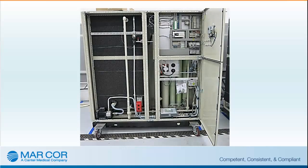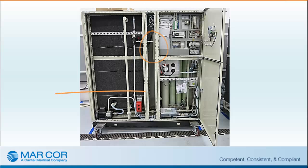An interior view of the CWP displays the hot water tank and heat disinfection components to the left. The centrally located inlet water tank, a view of the RO pump, and RO membranes can be seen on the lower right of the CWP. The chemical disinfection pump is located on the right side of the CWP below the electrical components.